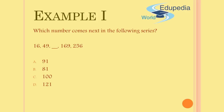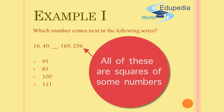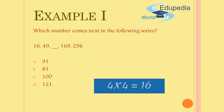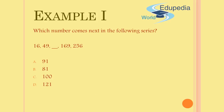Now, in the problem on screen — 16, 49, 169, and 256 — you will notice one similarity: all of these numbers are squares. 16 is the square of 4, 49 is the square of 7, 169 is the square of 13, and 256 is the square of 16. So I immediately analyze that I have 4 squared, followed by 7 squared, followed by a blank, followed by 13 squared, followed by 16 squared.